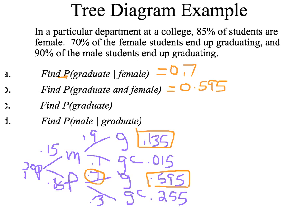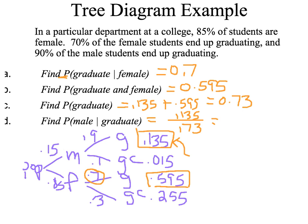Then the probability that someone graduates in general — that's this number plus this number: 0.135 plus 0.595, which gives us 0.73. So 73% of people graduate. The last one is a bit tricky: the probability that someone is male given that they graduated. Think of it as a fraction — on the bottom is all the graduates, which is 0.73. On the top is the male graduates, which is 0.135. That works out to about 0.1849. Once you have the tree diagram drawn, that's the hard part — answering the questions is the easy part.